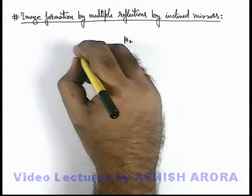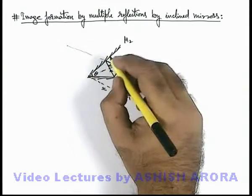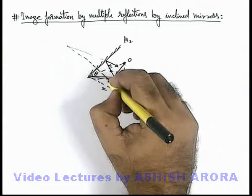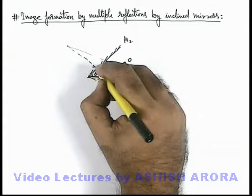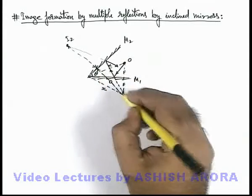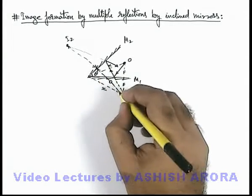An image is produced behind the mirror M2 such that it is located at the same perpendicular distance from M2.